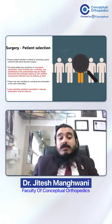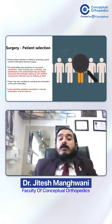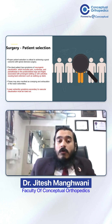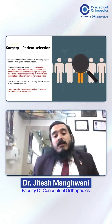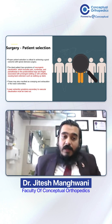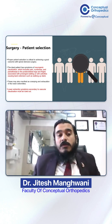So what is the definition of this ideal patient? The ideal patient is one having neurogenic claudication, which includes pain, numbness, and paresthesias in the posterior lateral legs and thighs, associated with prolonged walking or activities that cause back extension, such as walking up stairs. These are the patients who would be the best ideal candidates for surgery.